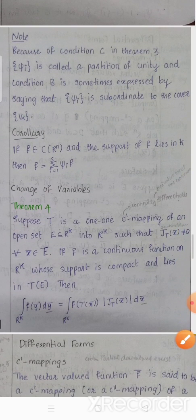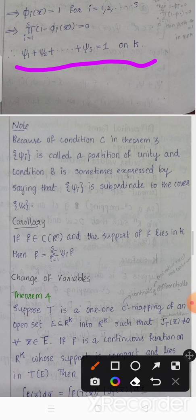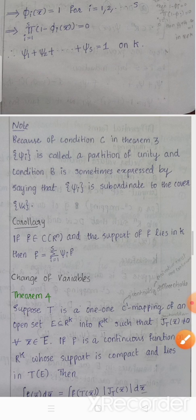Note: Because of condition (c) in the theorem, the collection {psi_i} is called a partition of unity. Condition (b) is sometimes expressed by saying that the collection {psi_i} is subordinate to the cover {V_alpha}. Corollary: If f ∈ C(R^n) and the support of f lies in K, then f = summation i=1 to s of psi_i · f.